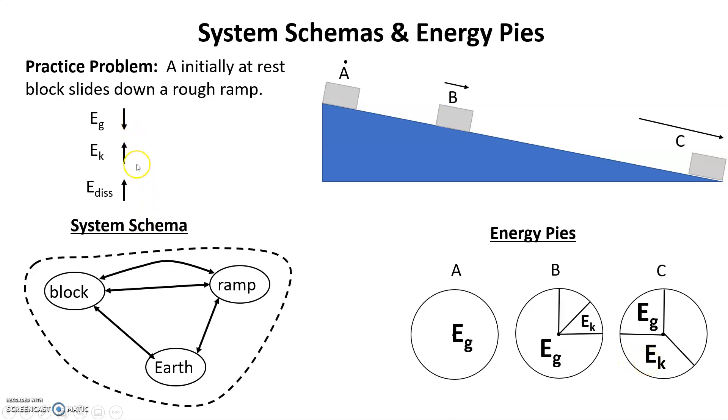That takes care of the EG and the EK. I only have one energy storage left, and it's the E-disc, so that must be the missing wedge in B, and then also in C. Notice going from B to C, the E-disc increased. And that's it. Good luck.